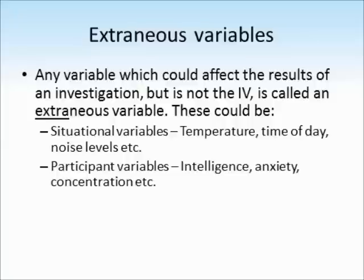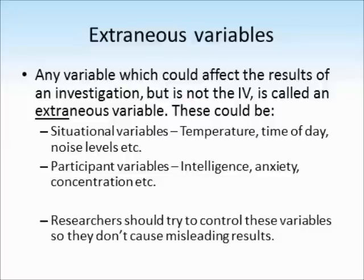Extraneous variables could also be differences in the participants themselves — participant variables. Things like intelligence, anxiety levels, and how well they can concentrate can all have an effect on results. If by some chance a lot of the participants in one group are very, very intelligent, that can give us a false indication of our results. Researchers should always try to control these variables so that they don't cause misleading results.